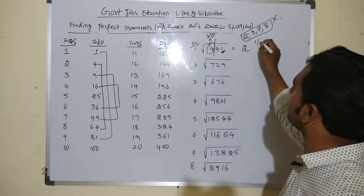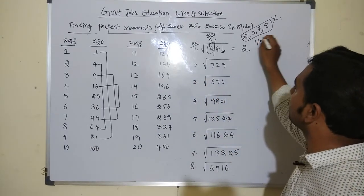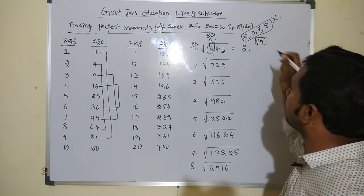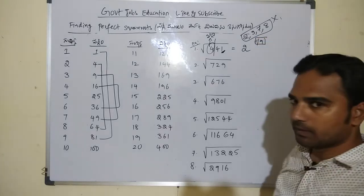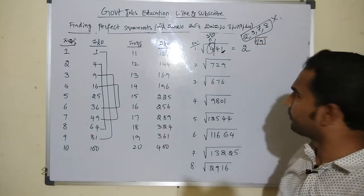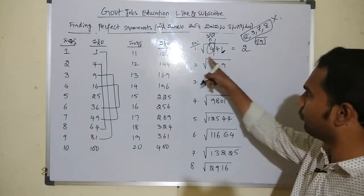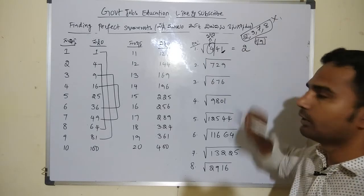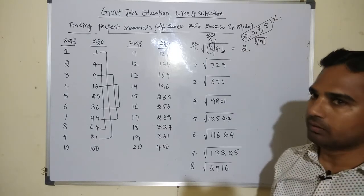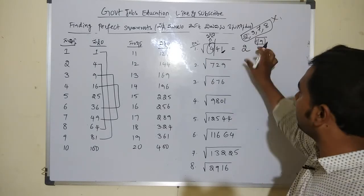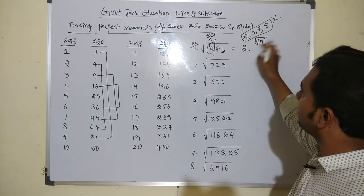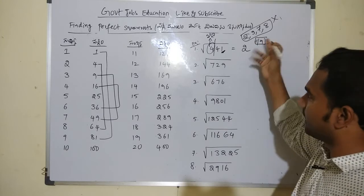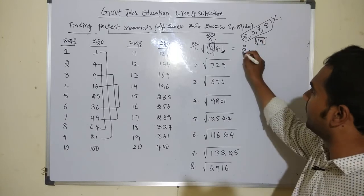We have two chances: 21 square and 29 square. 21 square is 441. So we have 21 and 29 as our two candidate answers.